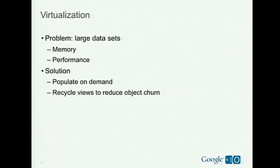The problem is dealing with large data sets — specifically presenting them. If you have 10,000 items, how do you get that on screen so the user can peruse them quickly? The two big challenges are memory and performance. You don't want to attach 10,000 views into your view hierarchy; views are fairly heavyweight objects. The solution we've implemented in ListView is that we populate views on demand — nothing gets added to the view hierarchy that isn't displayed on screen. Secondly, we recycle those views, reusing already-created views and filling in new content as items come through.